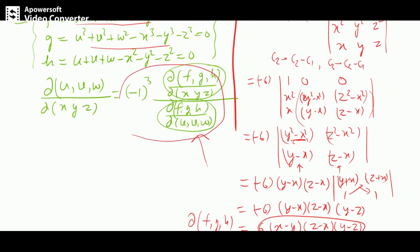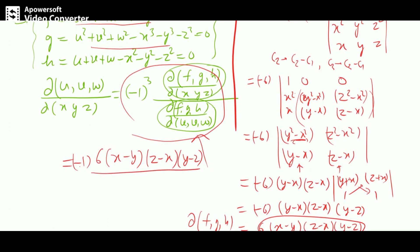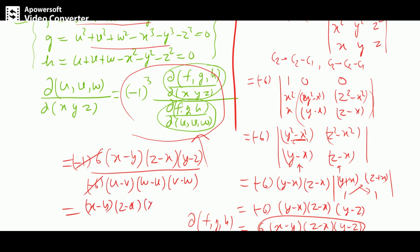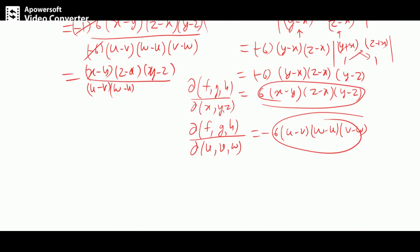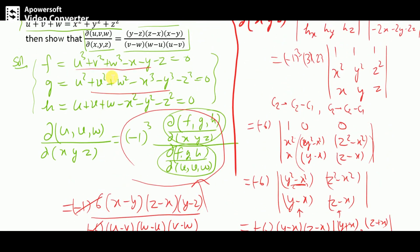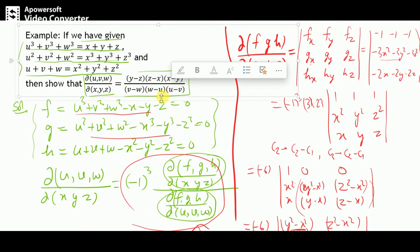Substituting both into the formula: (−1)³ · 6(x−y)(z−x)(y−z) / [−6(u−v)(w−u)(v−w)]. The negative signs cancel and the 6s cancel, giving the final result. In this way, using the property of implicit Jacobians, we can easily evaluate the Jacobian of implicit functions.